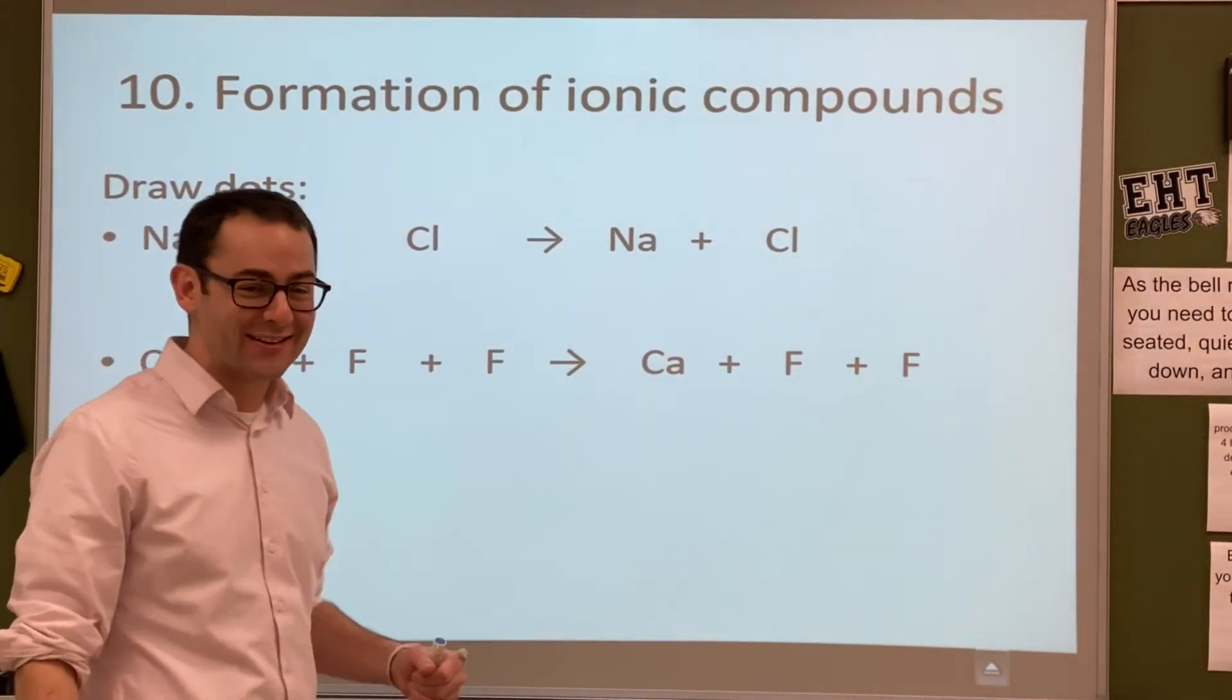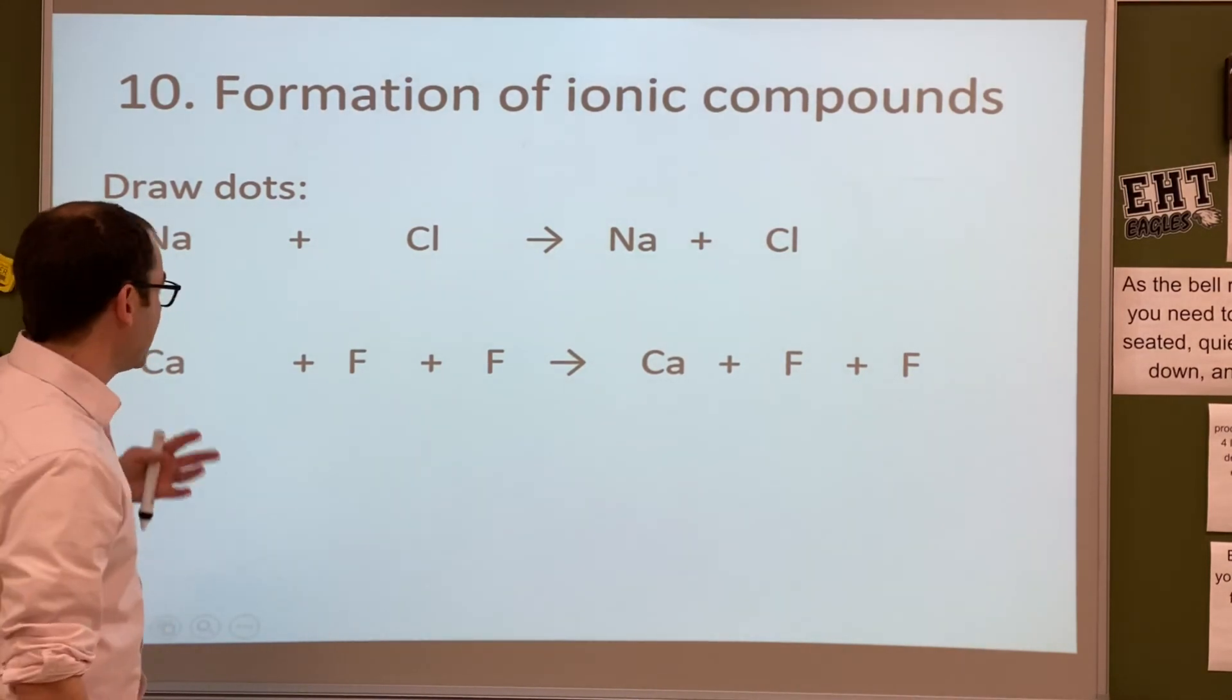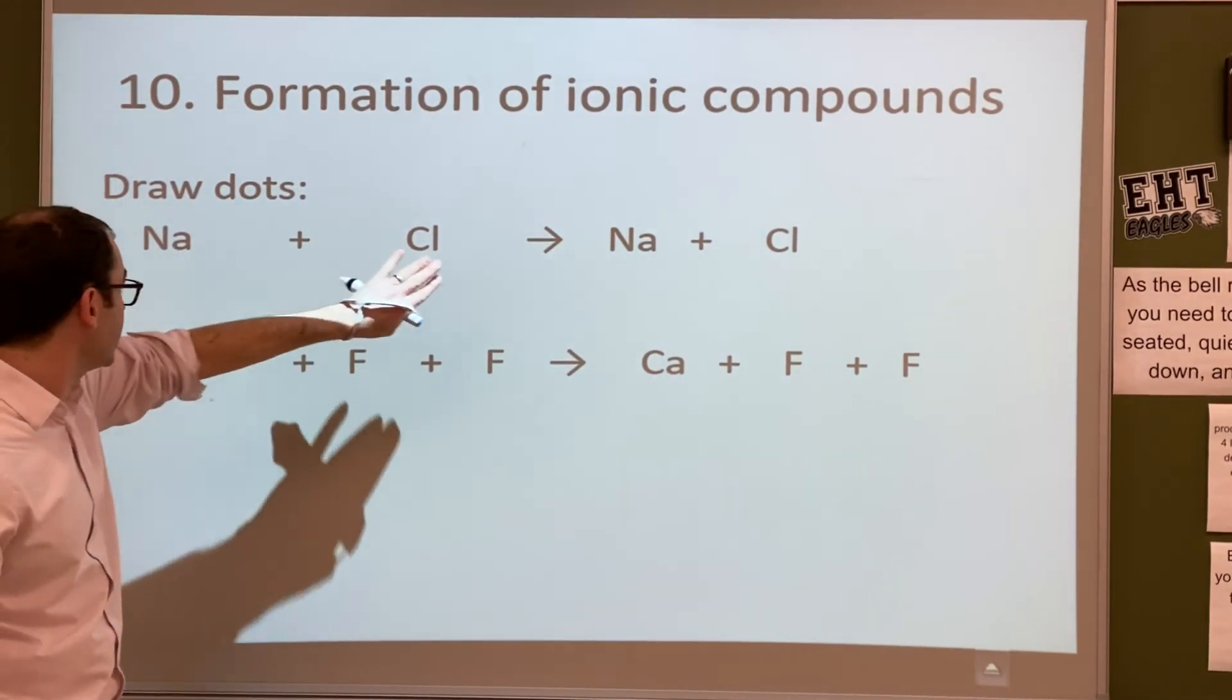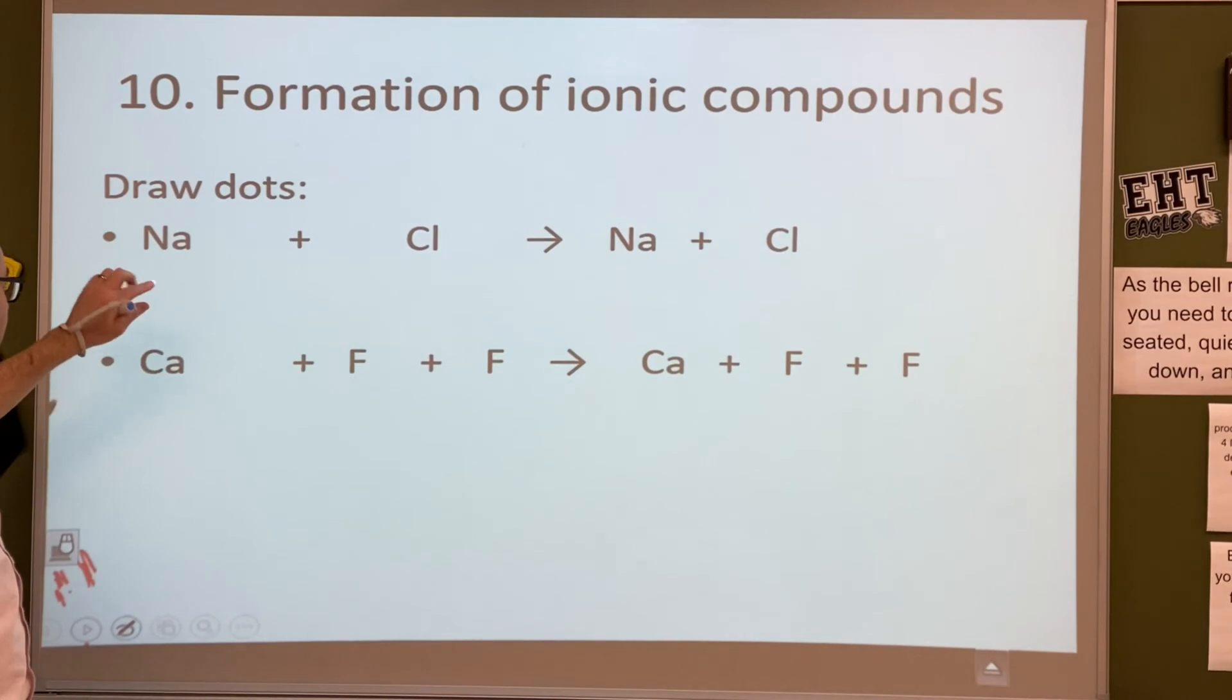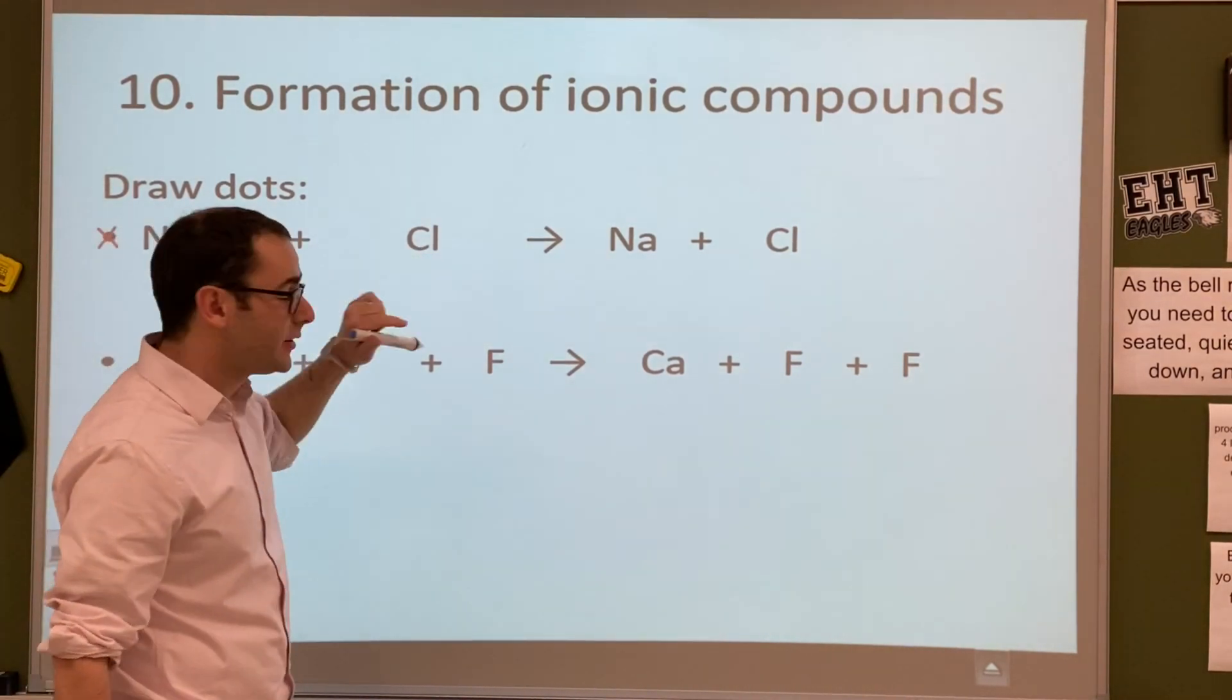Hey, Hermsters! Alright, so today we're going to talk about ionic compounds, and ionic compounds are when one atom loses an electron and one atom gains that electron. So let's take a look at sodium and chlorine, and let's talk valence electrons first. How many valence electrons does sodium have? Yeah, good. What about chlorine? Seven. Seven, good.